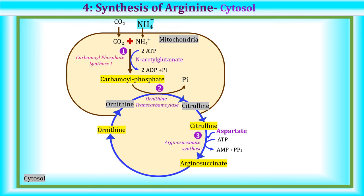The fourth reaction is synthesis of arginine. Arginosuccinate is cleaved by the enzyme arginosuccinase to form arginine. The nitrogen atom derived from aspartate is retained in arginine, while the remaining carbon skeleton of aspartate is removed as fumarate. This links the urea cycle to the TCA cycle through this fumarate.